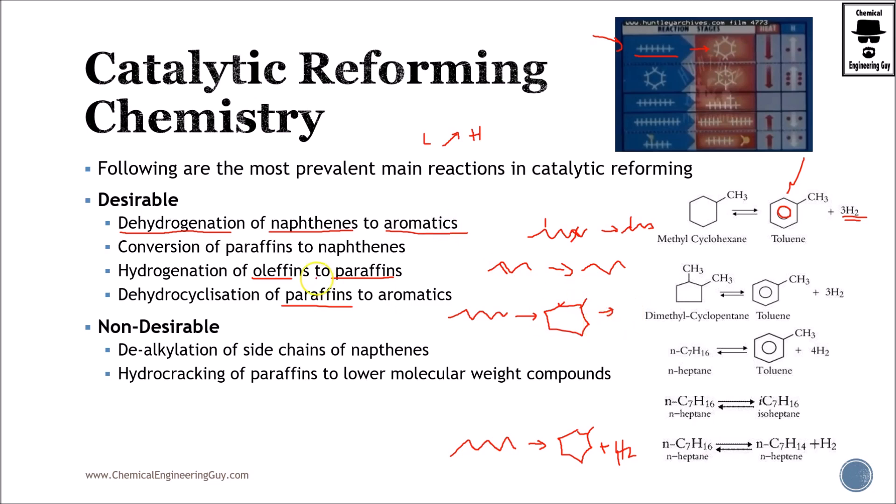The most common non-desirable reactions are the dealkylation of side chains of naphthenes. Let's say that you have these branches and then you produce maybe this one plus this one. You don't want to do that because the branches help in increasing the octane rating. Also you're going to produce gas, which is non-desirable. We don't want to decrease the volume or density of the material.